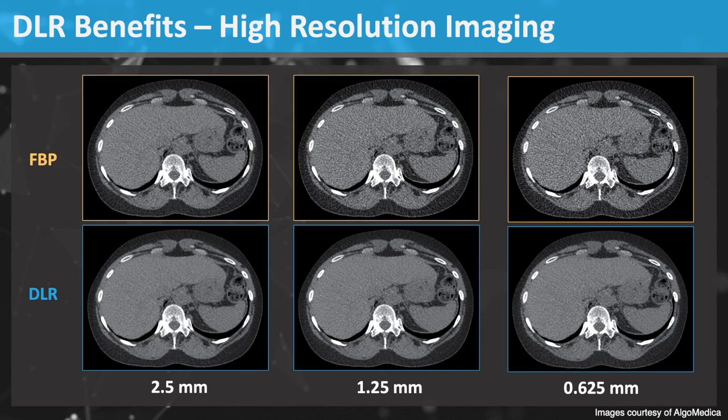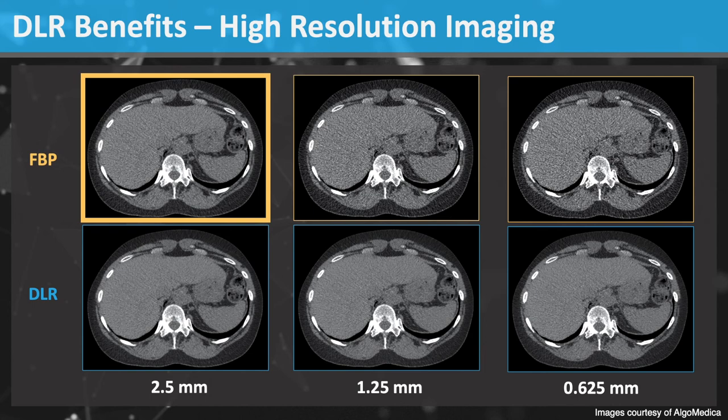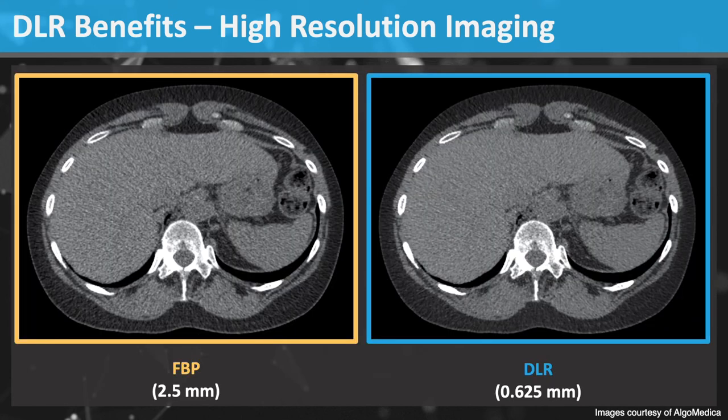However, the image quality with DLR is maintained, even with thinner slices. Now let's compare 2.5 mm slice thickness with filtered back projection to 0.6 mm slice thickness with DLR. If we take a close look, the thin slice images with DLR have similar image quality. DLR does not obey the normal rules of slice thickness and allows for high resolution CT imaging with minimal or no penalty.